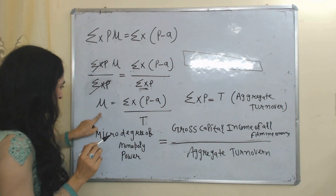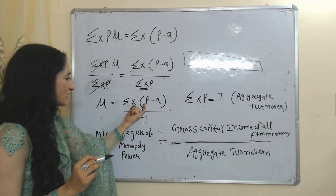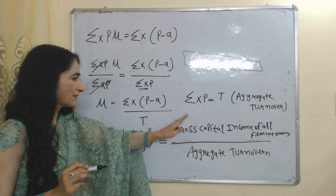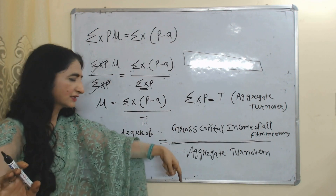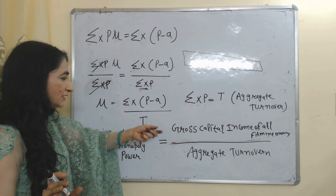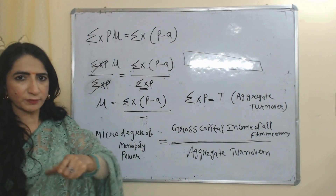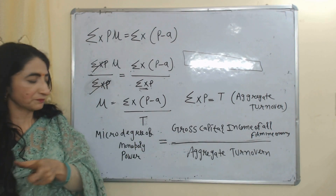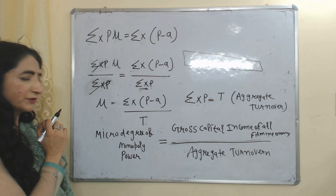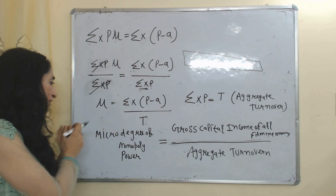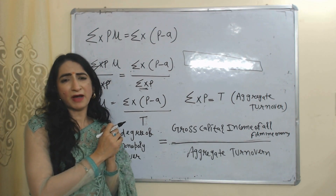Here, mu means the degree of monopoly power. This part represents the gross capital income of all firms in the economy, and T represents aggregate turnover. When we divide income by turnover, it becomes equal to profit margin. According to this equation, our profit margin depends on the degree of monopoly power.